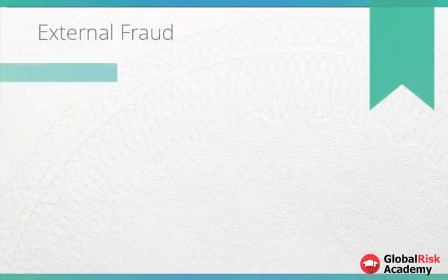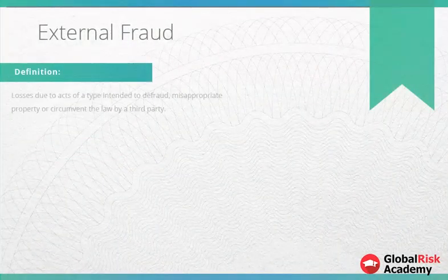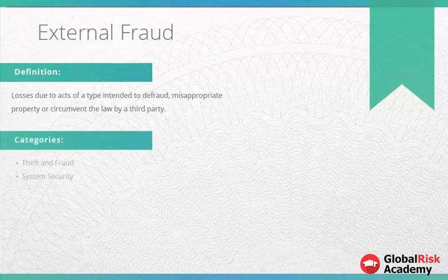External fraud is defined as losses due to acts of a type intended to defraud, misappropriate property or circumvent the law by a third party. This may include theft and fraud such as theft, robbery, forgery, or check kiting. Additionally, there is the risk of system security such as hacking or theft of information with monetary loss.